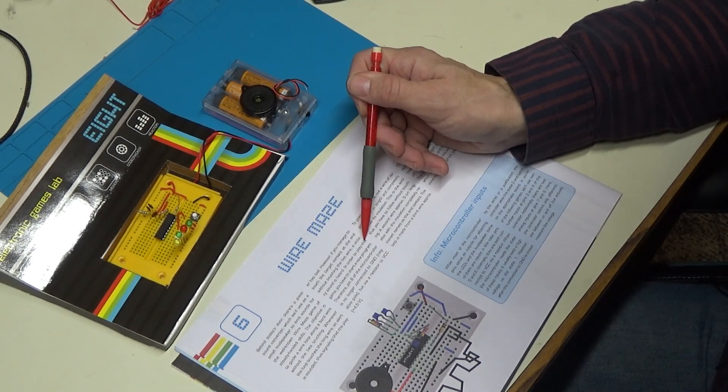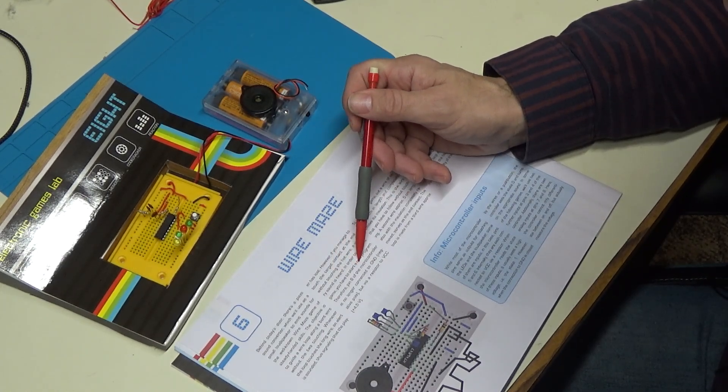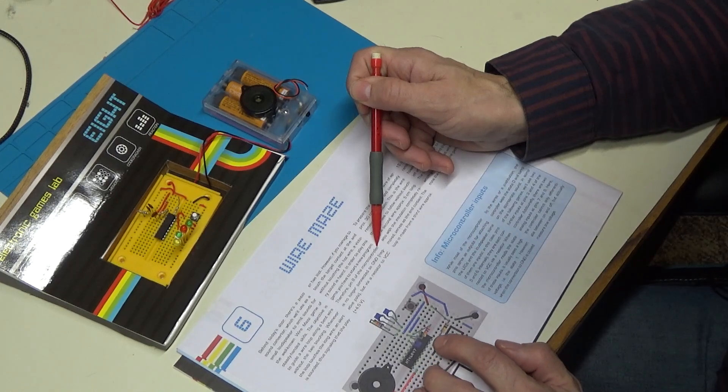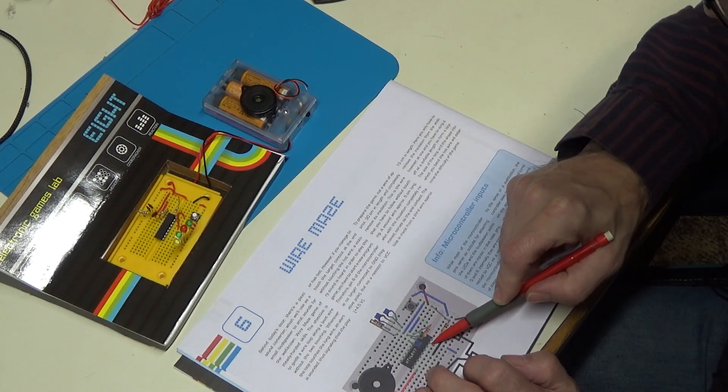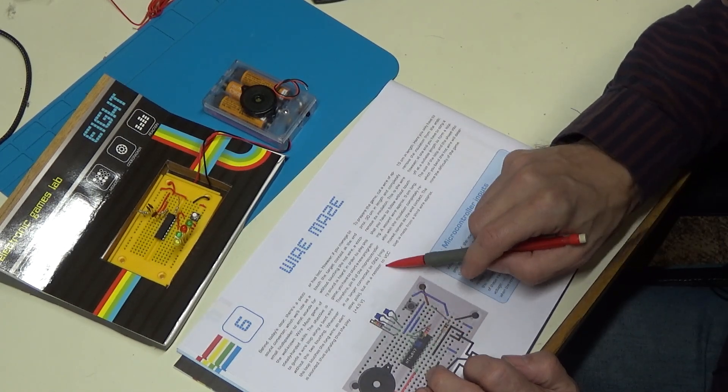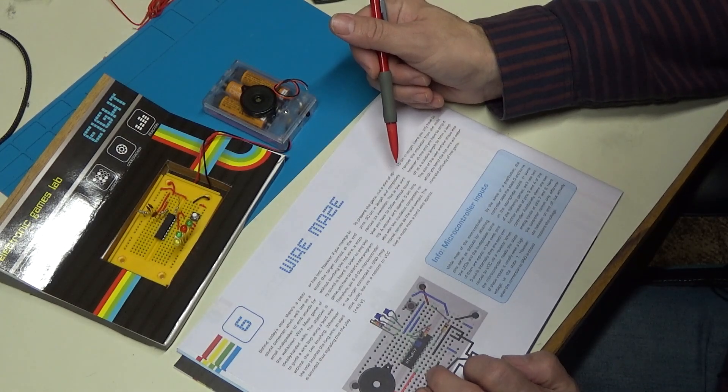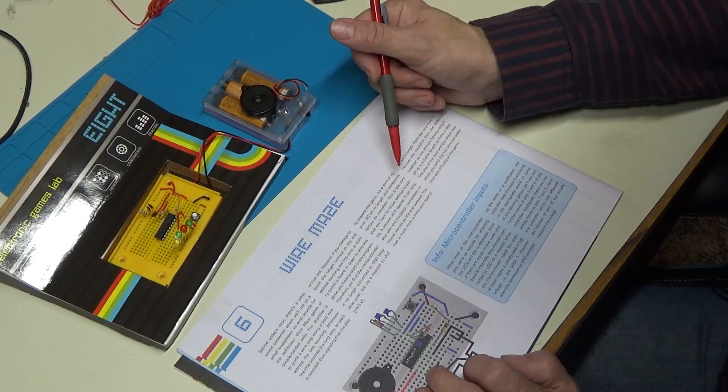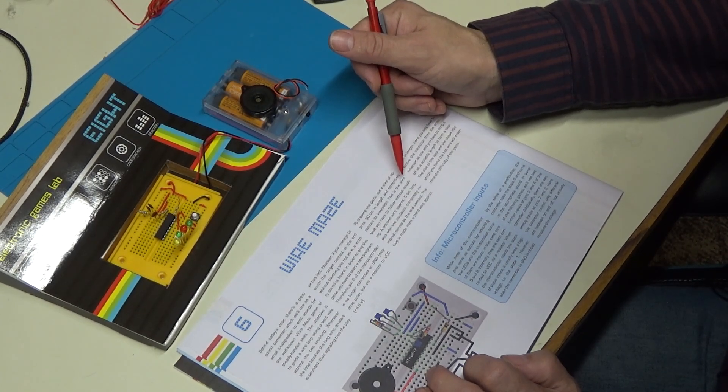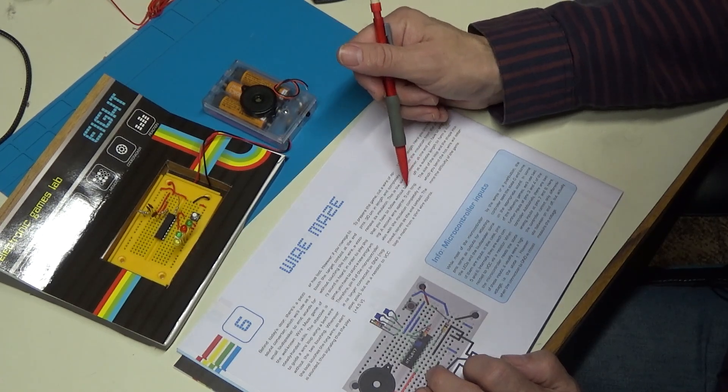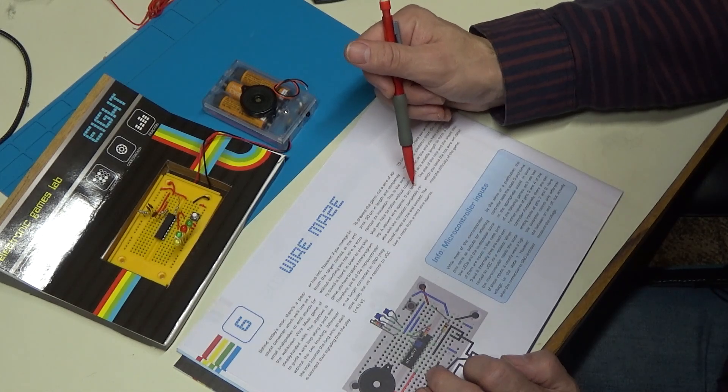In order to play this game, you have to start a new program. Therefore, pin eight of the microcontroller is no longer connected to ground, but via a resistor to VCC. To prepare the game, cut a wire of approximately 30 centimeters in length and completely remove its insulation. This is the wire that you have to follow without touching. A second wire, approximately five centimeters long, also with the insulation completely removed, serves as the end contact.